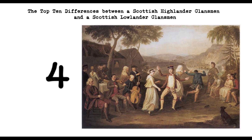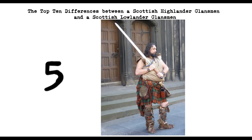5. Weaponry and Combat. Highlanders were renowned for their use of the broadsword and targe shield, while Lowlanders used firearms and pikes. Highlanders also relied more on guerrilla tactics and surprise attacks in battle.